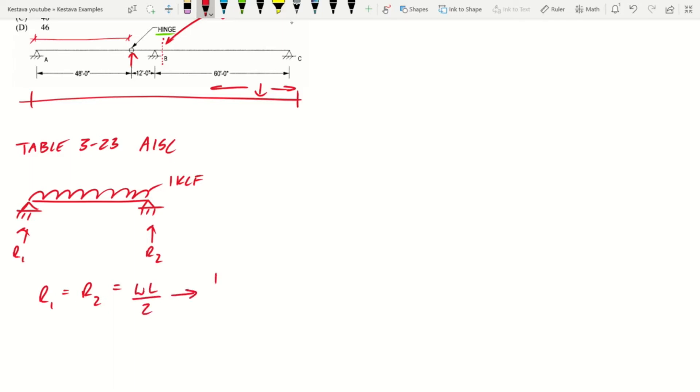So R1 equals R2, which equals, as we all know, WL over 2. That breaks down to 1klf times a distance of 48 feet. So that's the distance to the pin, or to the hinge, back to support A, divided by 2.